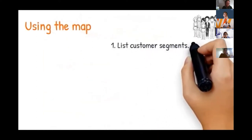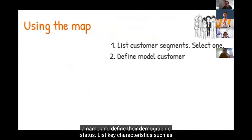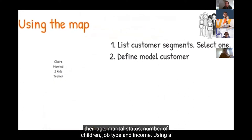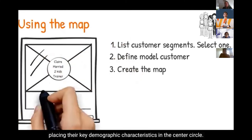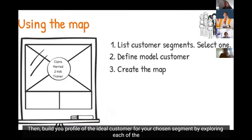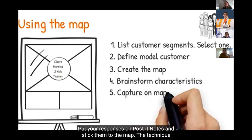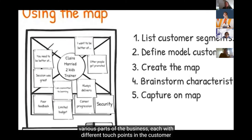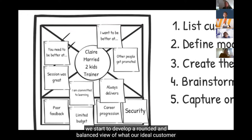To use the customer empathy map, first list your customer segments — each segment should have a need that requires a distinct offer, different distribution channel, or alternative customer relationship. Select the one you want to focus on. Next, give your customer a name and define their demographic status. List key characteristics such as age, marital status, number of children, job type, and income. Draw your customer empathy map placing their key demographic characteristics in the center circle, then build your profile by exploring each area of the map. The technique works best when you get input from a group of colleagues who ideally work in various parts of the business, each with different touch points in the customer experience.